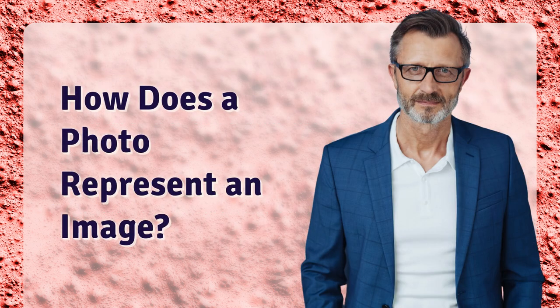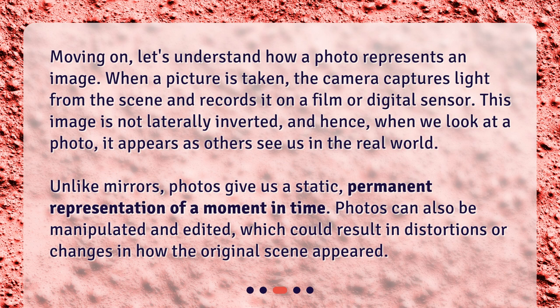How does a photo represent an image? When a picture is taken, the camera captures light from the scene and records it on a film or digital sensor. This image is not laterally inverted, and hence, when we look at a photo, it appears as others see us in the real world. Unlike mirrors, photos give us a static, permanent representation of a moment in time. Photos can also be manipulated and edited, which could result in distortions or changes in how the original scene appeared.